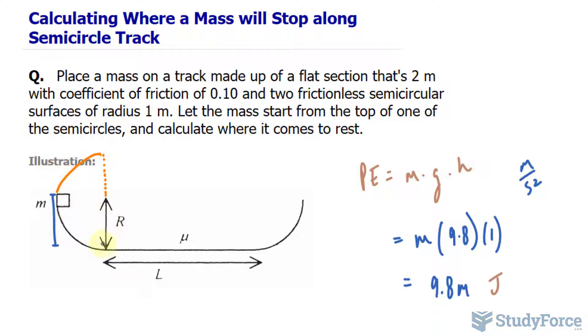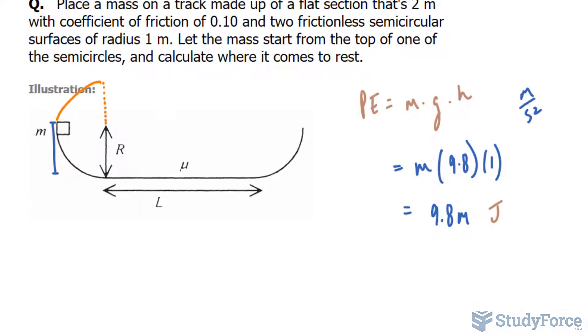So once this mass reaches the area where there is a coefficient of friction, that energy will dissipate into doing work to overcome that friction. So it will go into the work required to overcome the friction from here to here. To represent that mathematically, we can write down that the potential energy is equal to the work required to overcome the force due to friction. Remember, work is calculated using force times displacement. So f times s or f times x, whatever you choose.